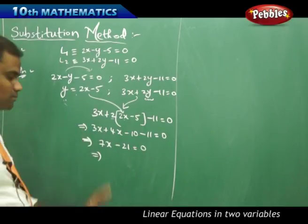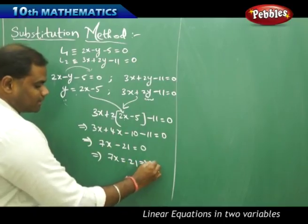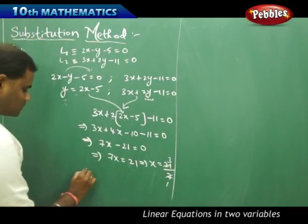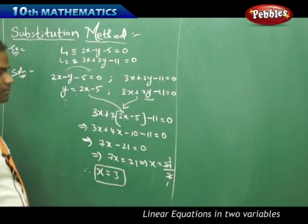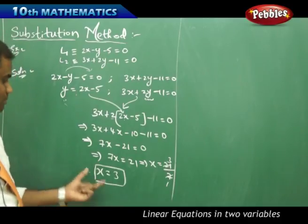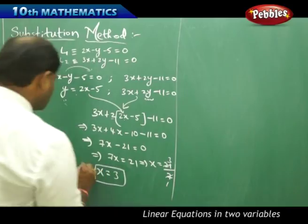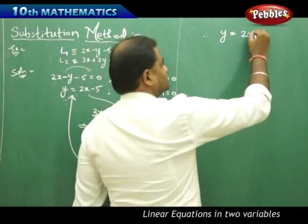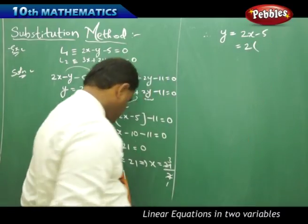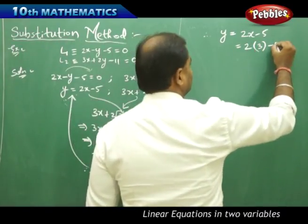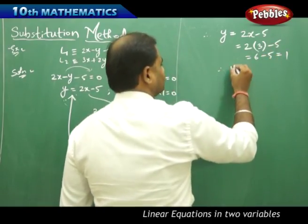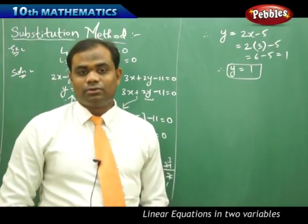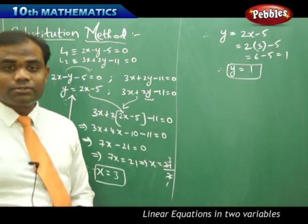Taking all x terms to one side and constants to the other, I get x equals 21 over 7, which gives x equal to 3. Now substituting x equals 3 back into the expression y equals 2x minus 5, I get y equals 2 times 3 minus 5, which is 6 minus 5, which is 1. Therefore y equals 1. So x equals 3 and y equals 1 are the solutions of lines L1 and L2 using the substitution method.